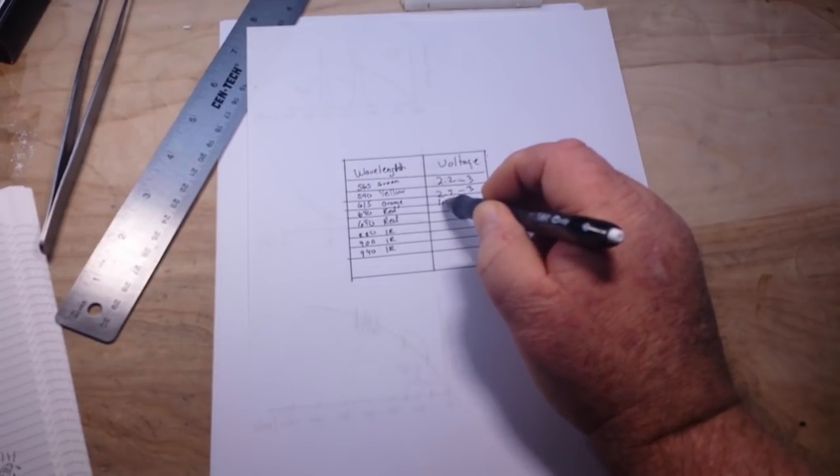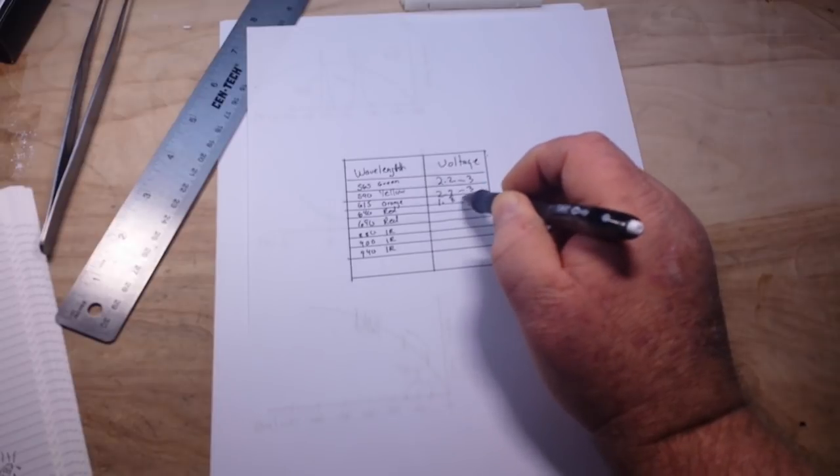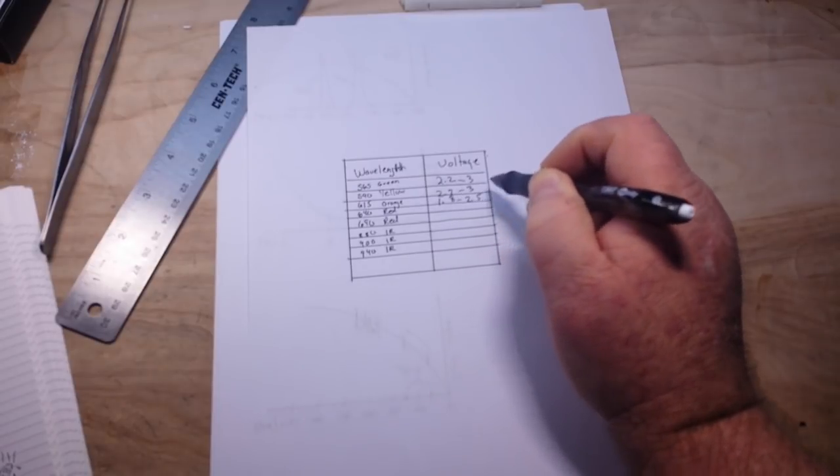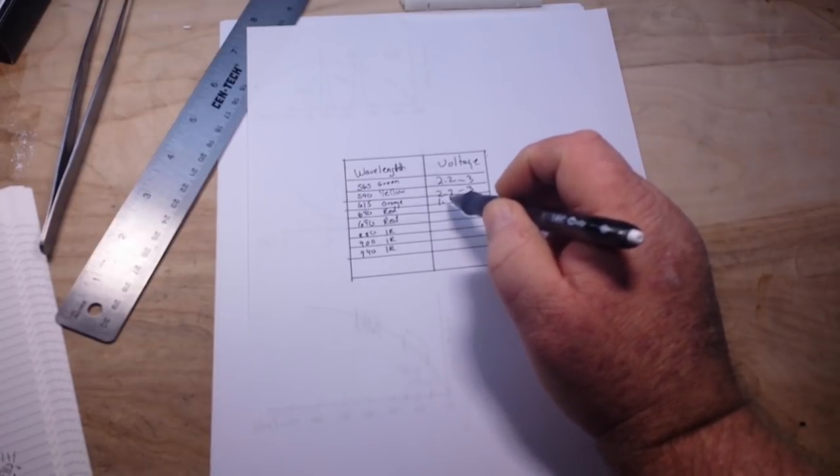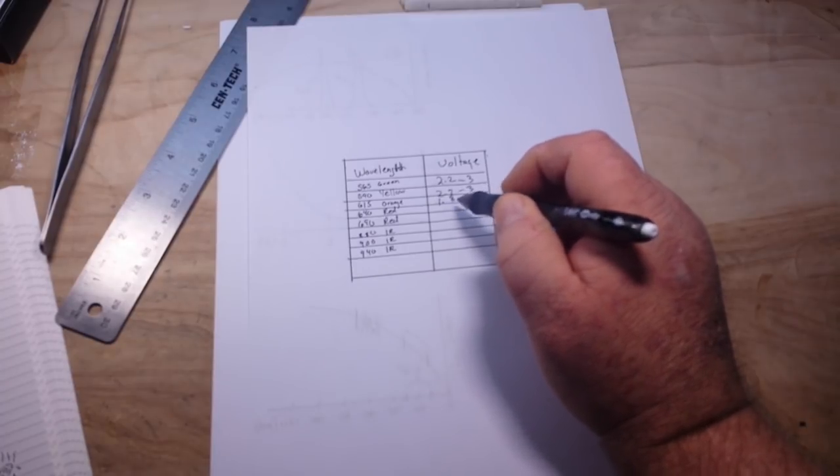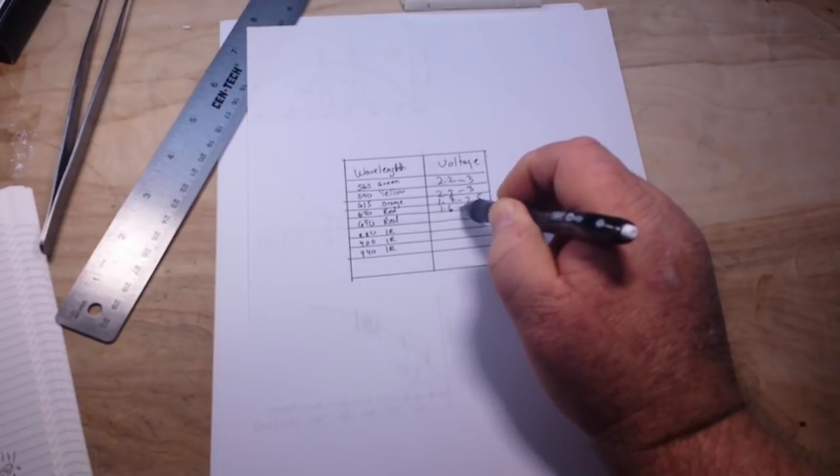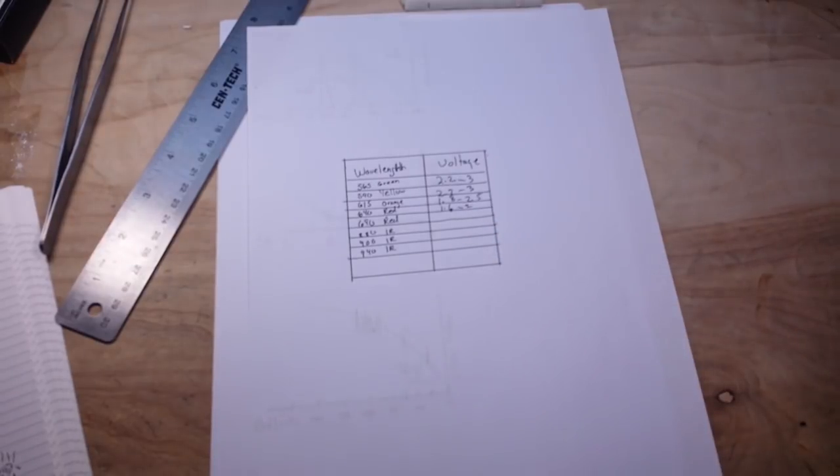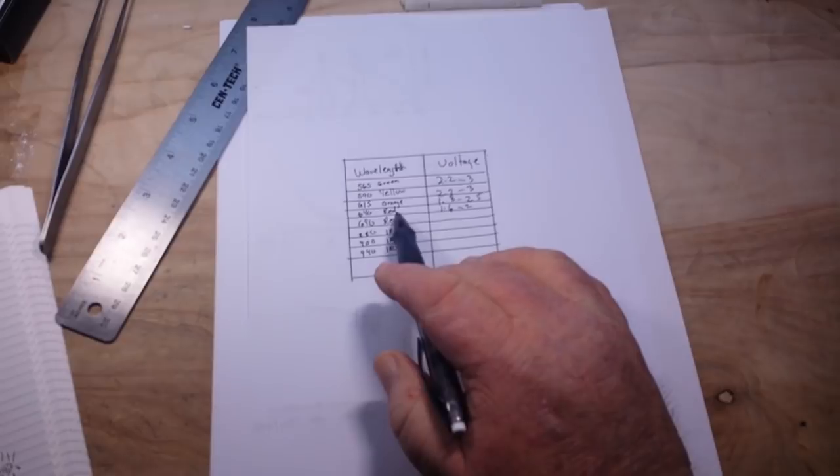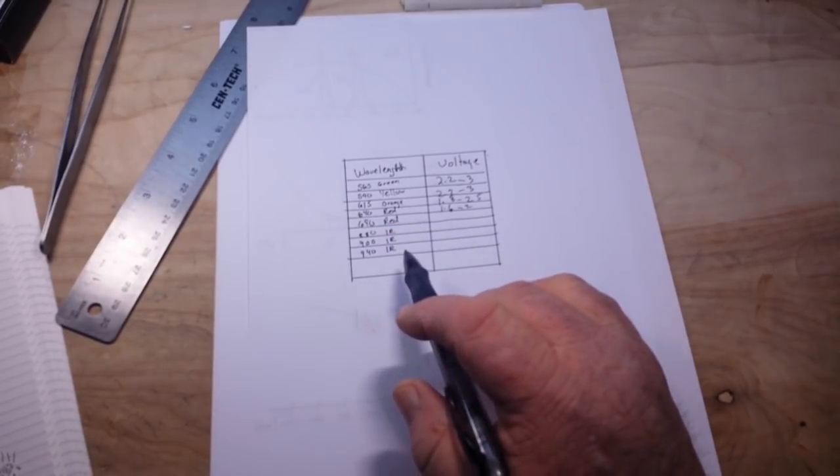The orange is going to be a little bit lower. It's going to come in around 1.8 to, let's say, 2.5 volts. Now the reds are where we start getting into some nice. The 640 nanometer red is going to start to conduct at about 1.6 volts to 2 volts. So you see, it doesn't take as much forward voltage to drive that red as it does to drive the green.